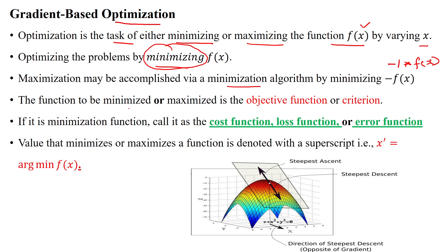The function which is to be minimized or maximized is called the objective function, or the criterion, or the boundary function. If the function is a minimization function, we can call it the cost function, loss function, or error function. These three terminologies are used in ML and DL applications whenever we use gradient-based optimization.